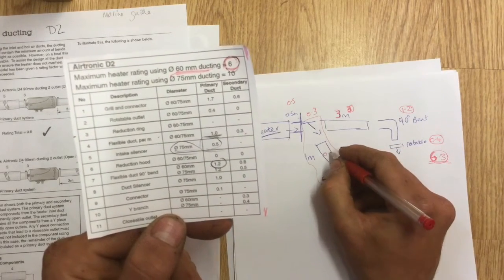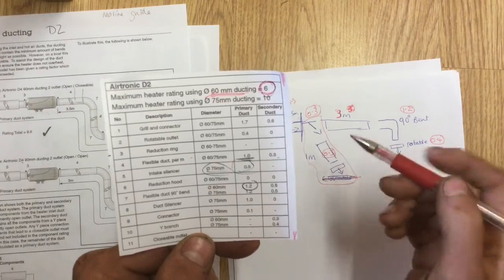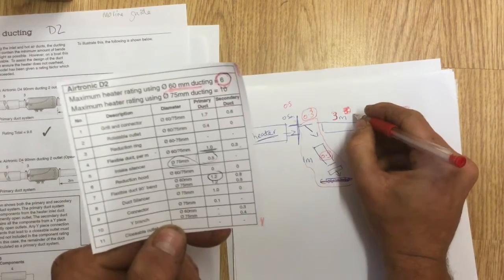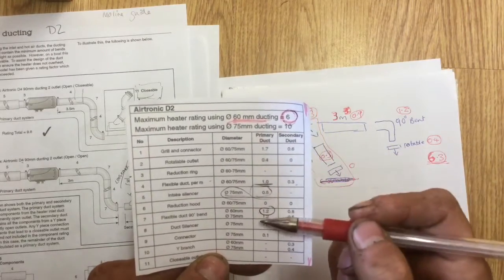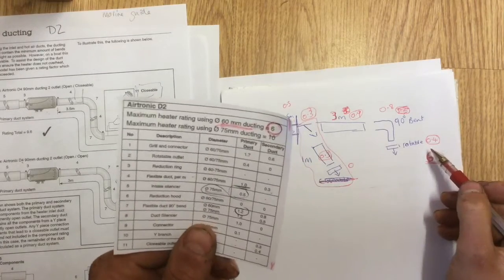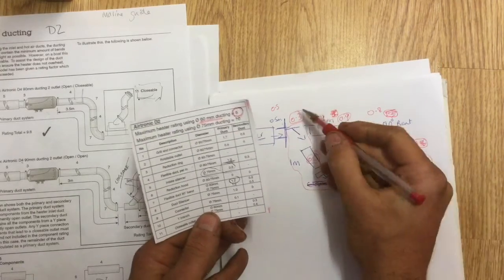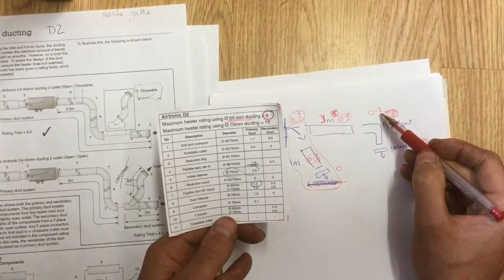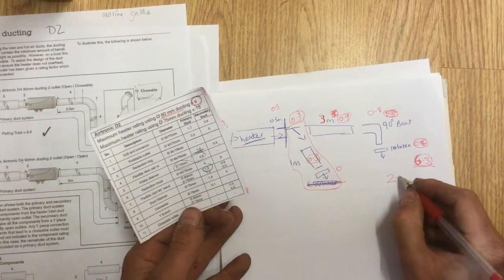Perfect. The out vent, if we have a rotatable vent, is worth nothing on secondary ducting - that's a big old zero. Three meters of pipe, that'll be 0.9. 90 degree bend is 0.8, and a rotatable out we've already looked at is worth 0. Let's get those numbers added up and we'll see what it works out to. You have to bear with me here. So we've got 0.6, 1.5 with that, there'd be 2.3. So we're suddenly at 2.3.